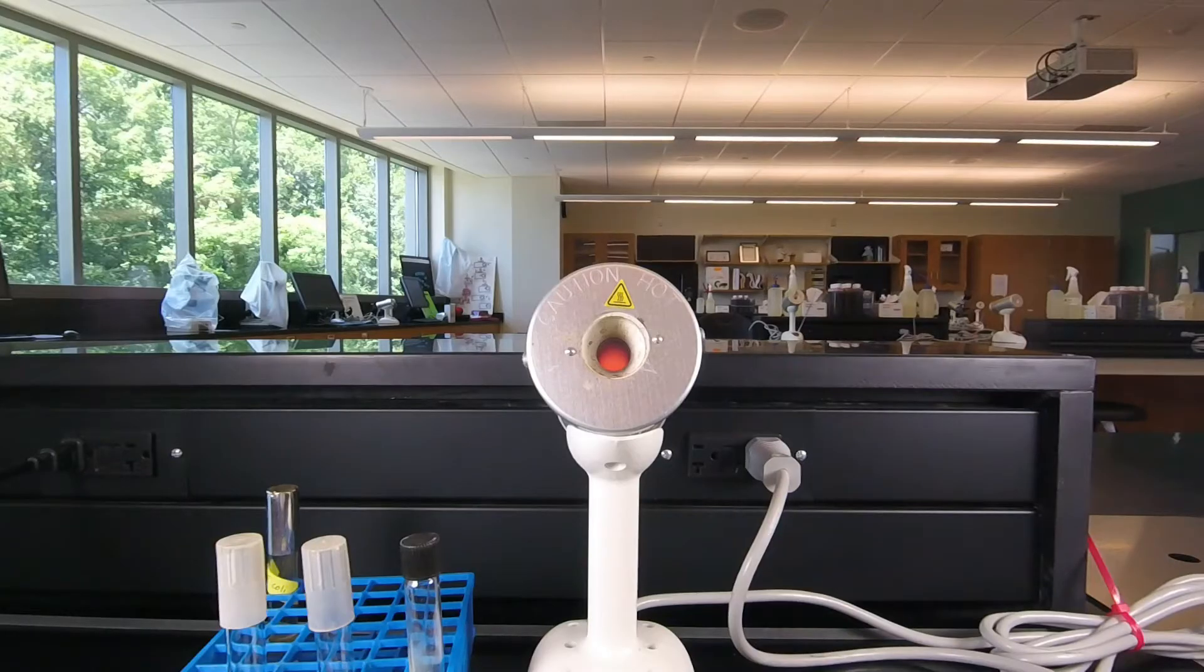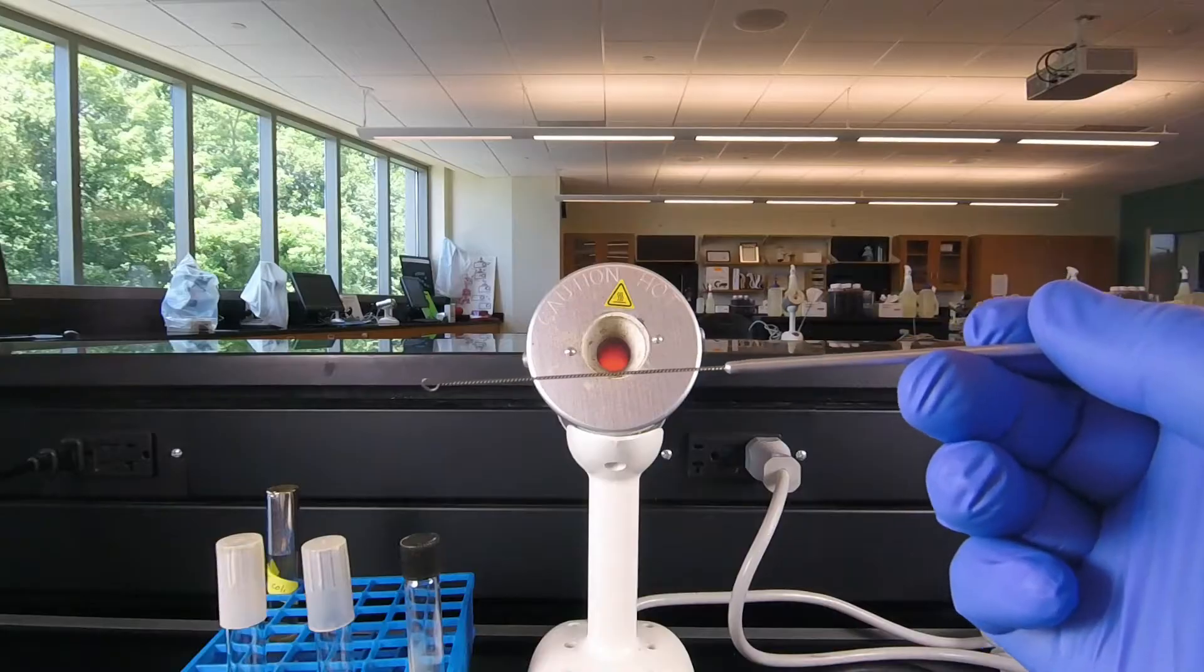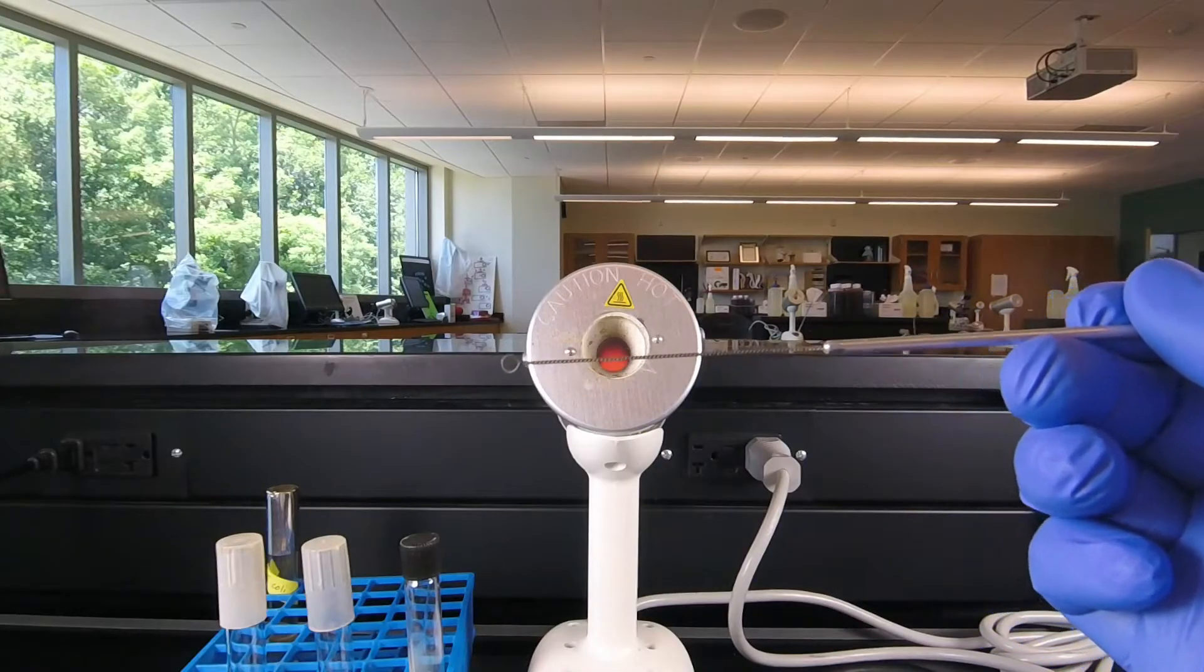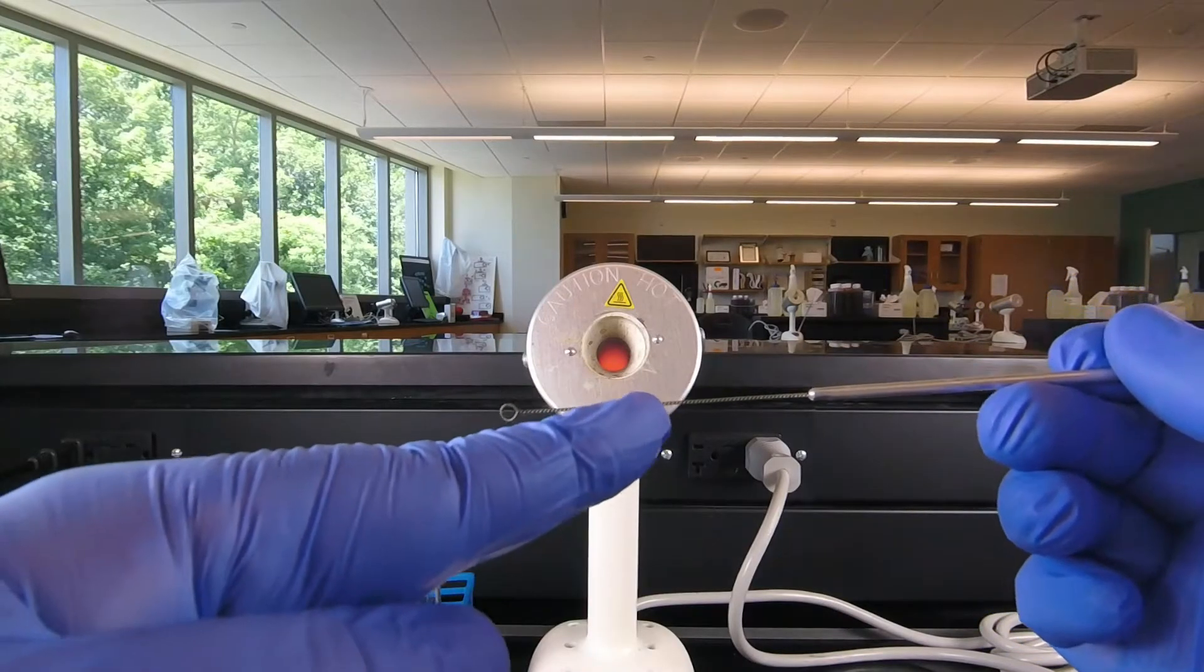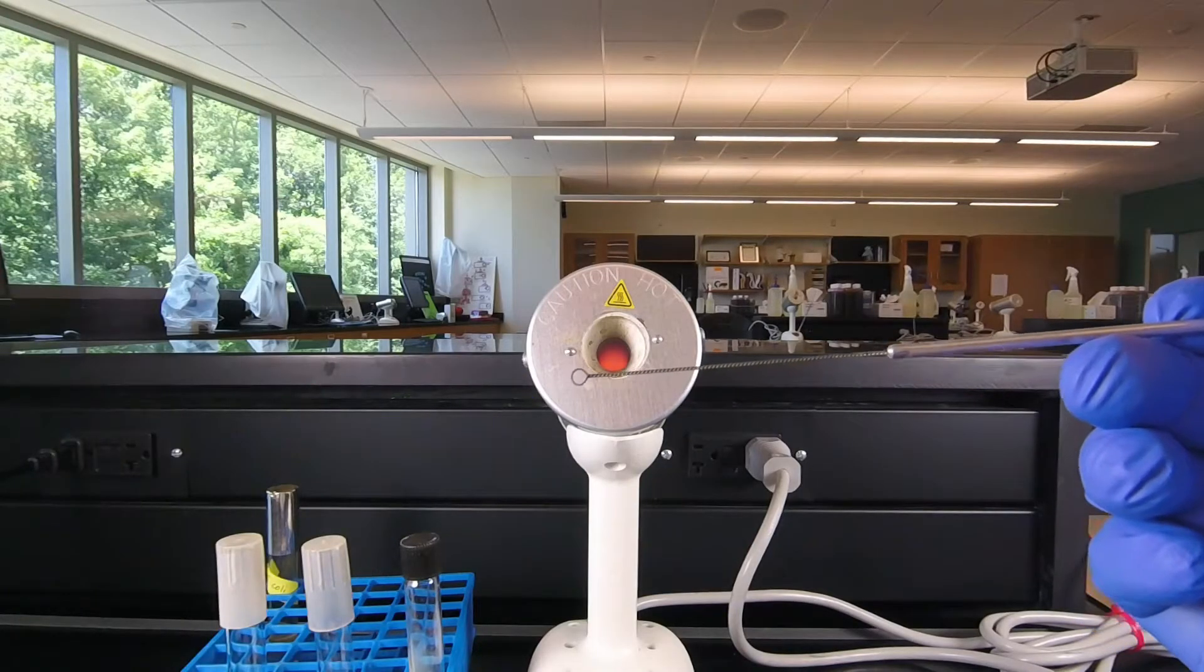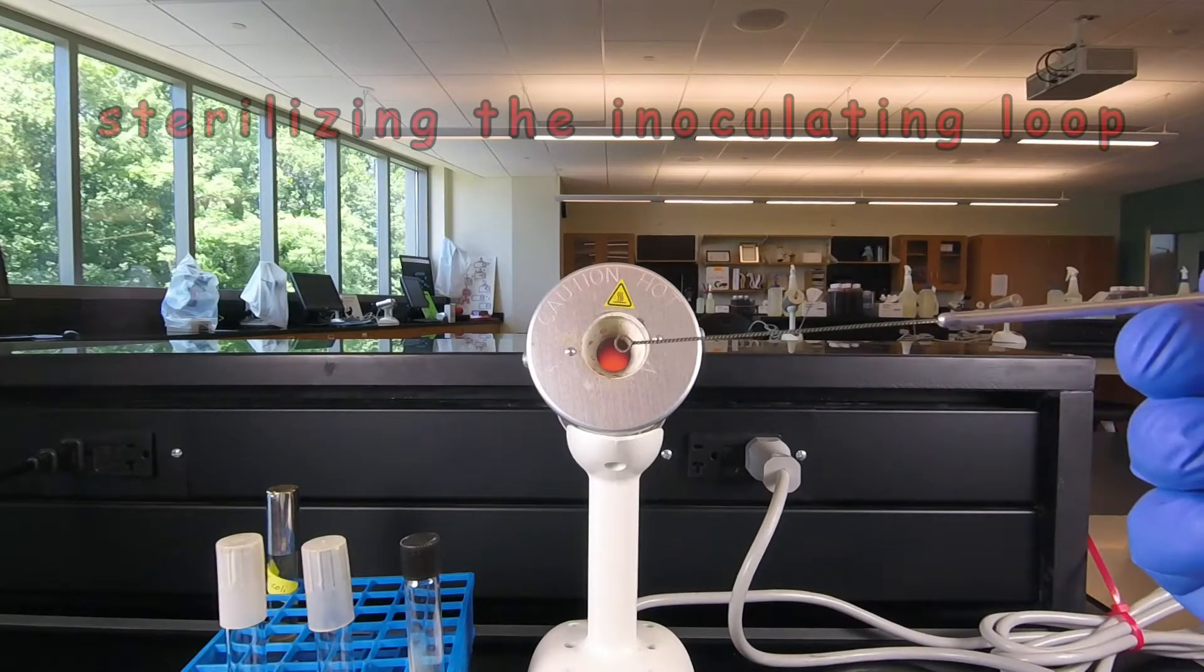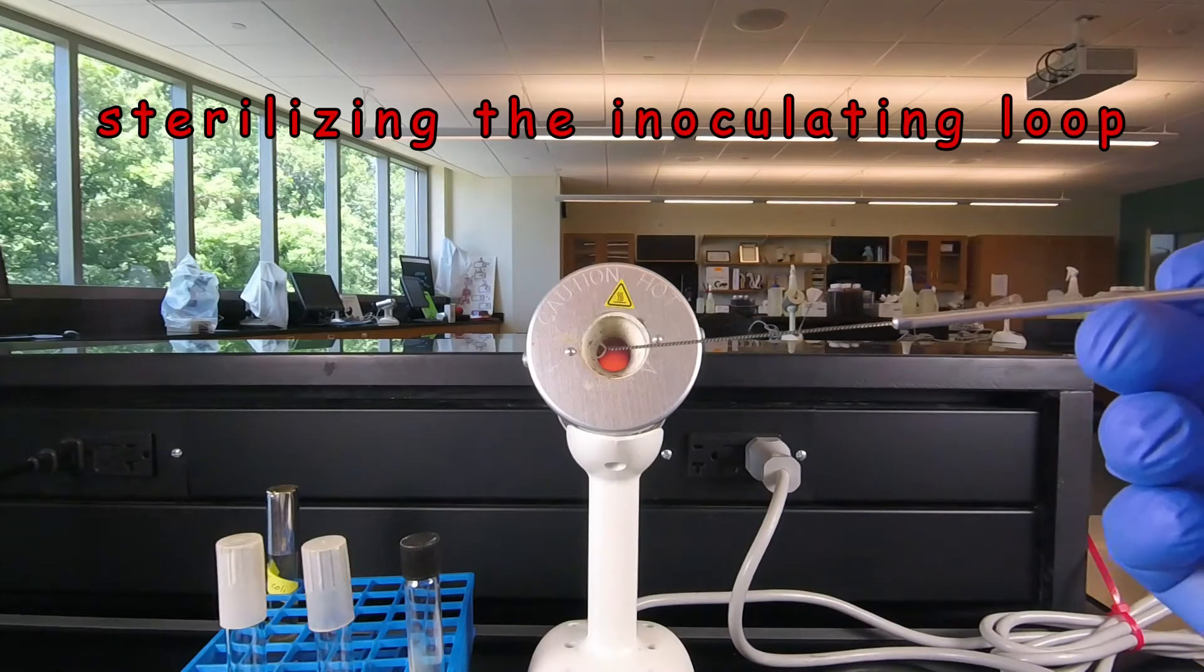Now for doing transfer we normally use a sterile inoculating loop and the inoculating loop is a handle that has a wire that terminates in a loop on the end. And before we can put that into any bacteria to remove them or to do any sterile transfers, we need to sterilize the loop.